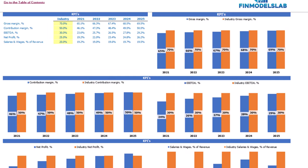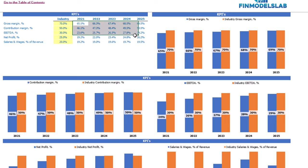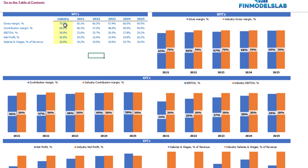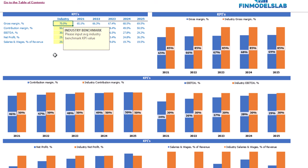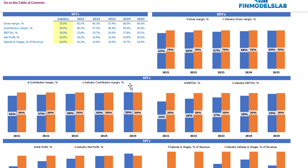On the benchmarks KPI tab you may compare your financial outputs with your industry benchmarks. You have 5 different benchmarks: gross margin, contribution margin, net profit, EBDA, and salaries and wages as a percentage of revenue. In the model cells you may see the values produced after you set up all the drivers. In the yellow cells you can set up your industry benchmarks — for example, gross margin for your industry in your particular country is 85%. Below you may see the same information in graphical form.